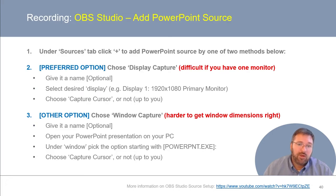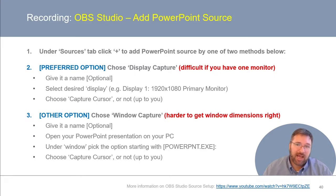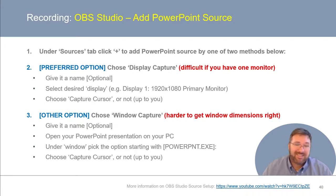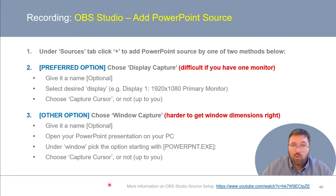If that first option isn't working for you, you can also choose window capture. However, I found this approach doesn't work as well when setting up PowerPoint presentation capture. Using this approach, you're going to give your source a name, then open up your PowerPoint presentation on your PC, and then in OBS under Window, you're going to pick the option starting with PowerPoint.exe — basically selecting the PowerPoint window on your computer, however it's been sized. As before, you can decide whether or not you want to capture your cursor. For more information on OBS Studio's source setup, check out this video.